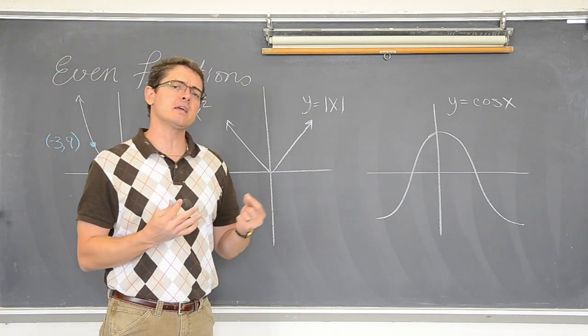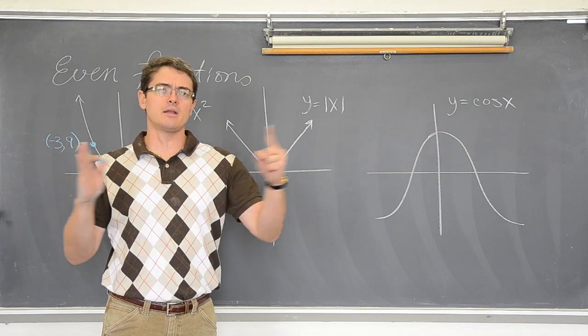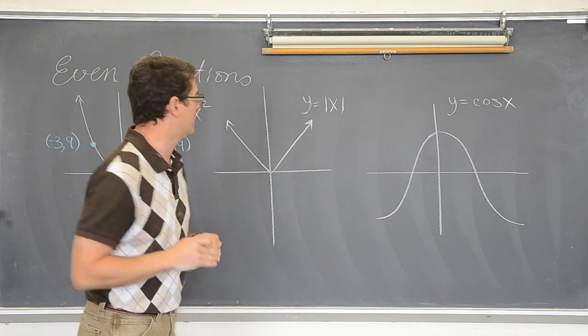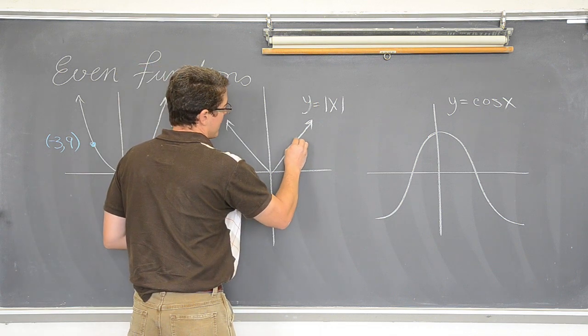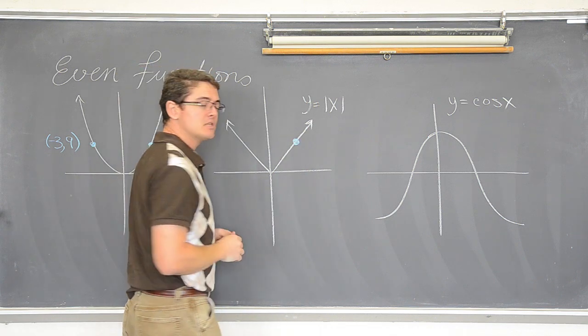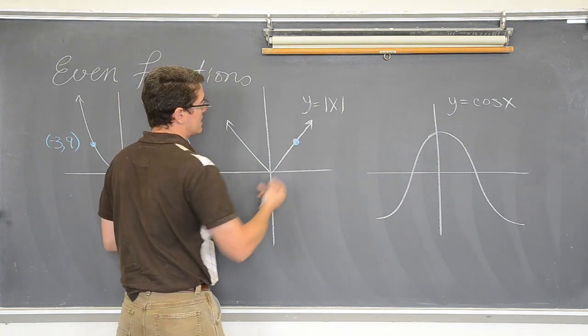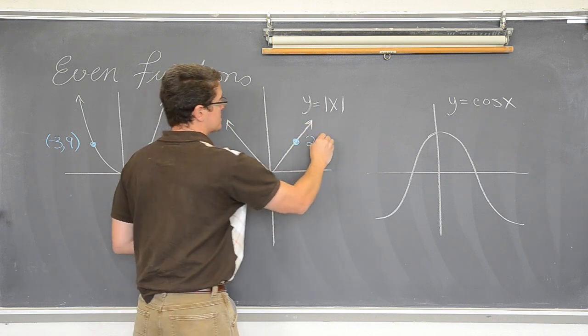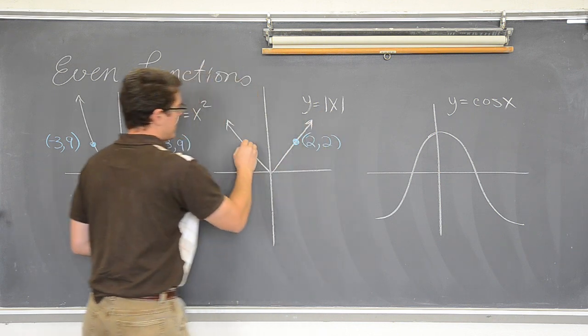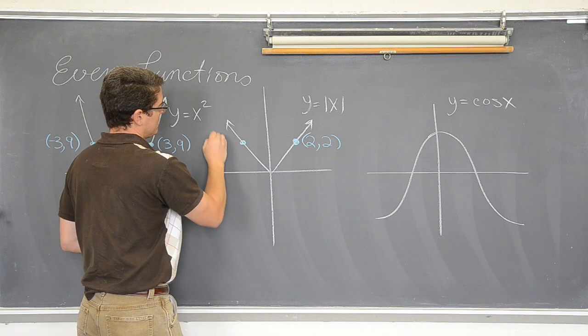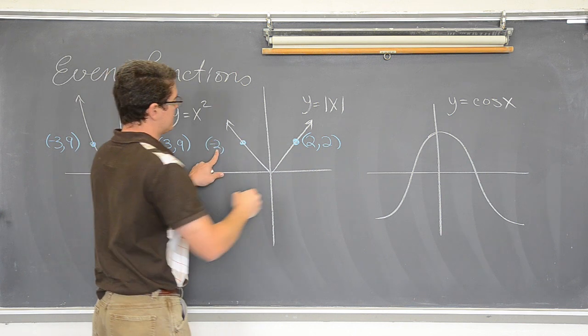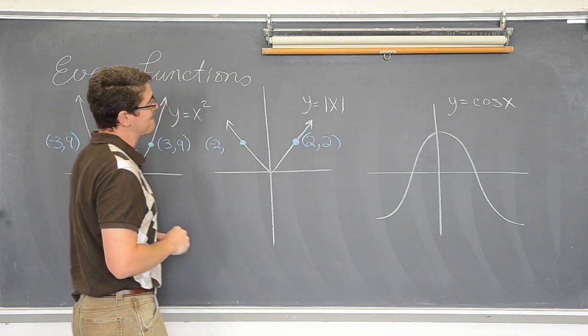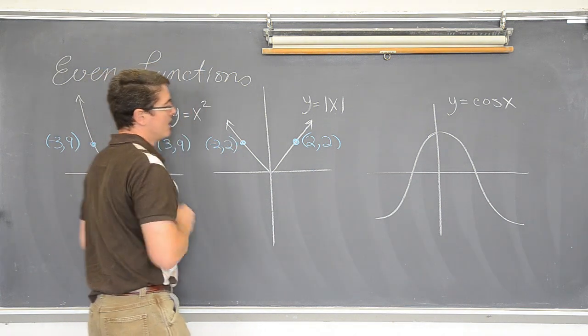Absolute values, we all know that you get rid of negative signs. The reason why is on a number line an absolute value sign will tell you how far a value is away from zero. As far as our algebra goes right now though, just know that they get rid of negative signs. So let's say x equals 2. If I plug in 2, the absolute value of 2 is 2. If I go to the other side here and let x be negative 2, the absolute value of negative 2 is positive 2.